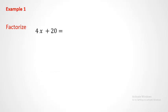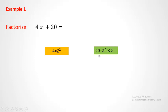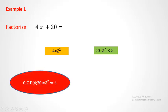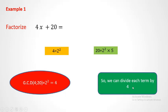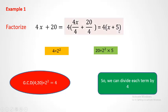For example, factorize 4x plus 20. Find the prime factorization: 4 is 2 squared, and 20 is 2 squared times 5. The common factor is 2 squared, so the GCD is 4. Take 4 outside, open parenthesis, and divide each term by 4: 4x divided by 4 is x, and 20 divided by 4 is 5. This is the factorized form: 4(x + 5).